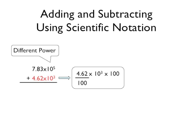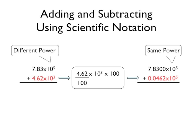But when you do this, you will also need to divide the 4.62 by 100 to keep the overall value the same. So 4.62 times 10 to the 3rd is the same as 0.0462 times 10 to the 5th.